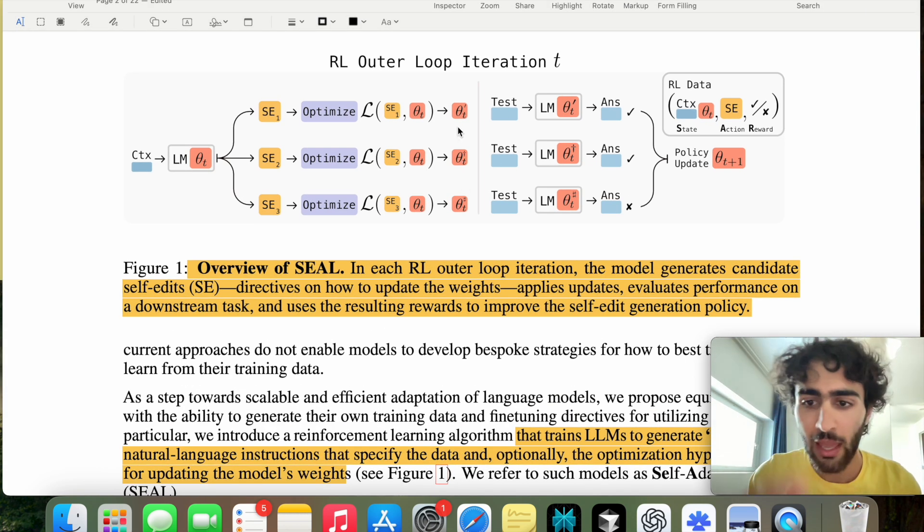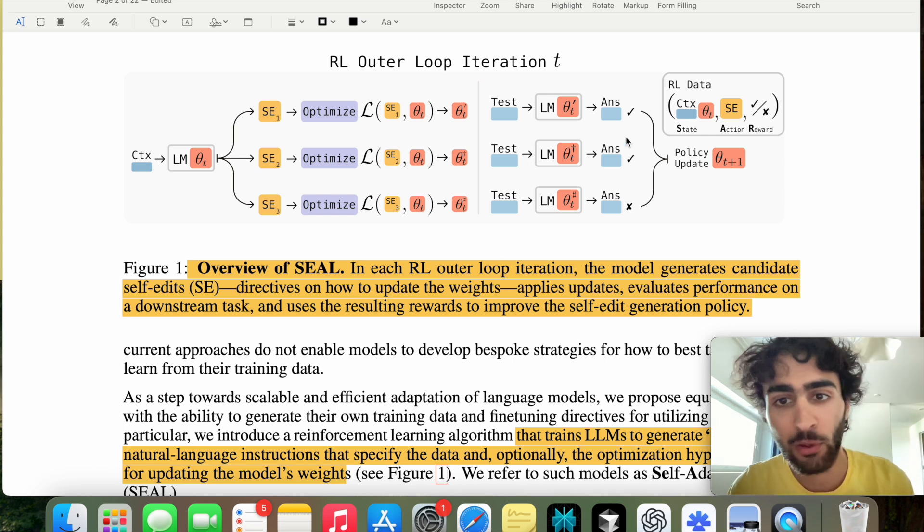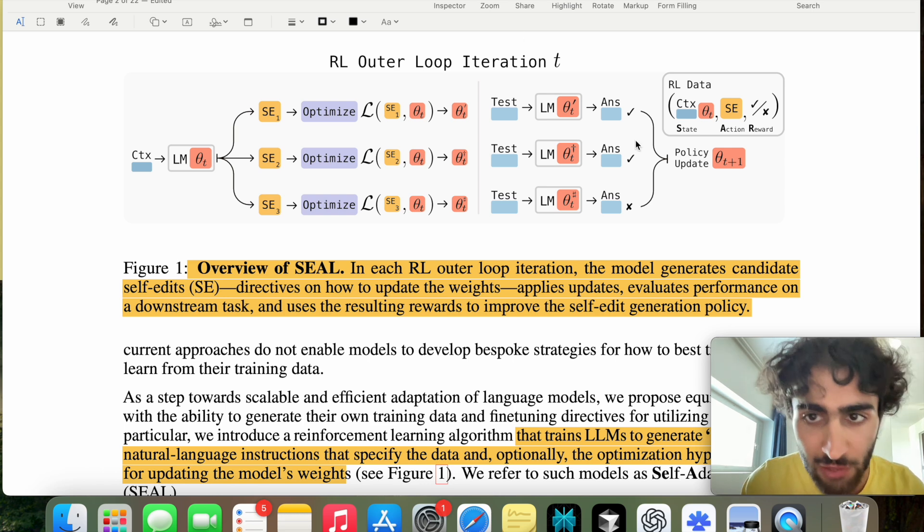So once we learn our weights, and we take the test, the quiz itself, and then we'll test our results. And then we use these results in a reinforcement learning setting to update our policy on drafting these self-edit notes in this state action reward Markov decision process. So this is the overall scheme.